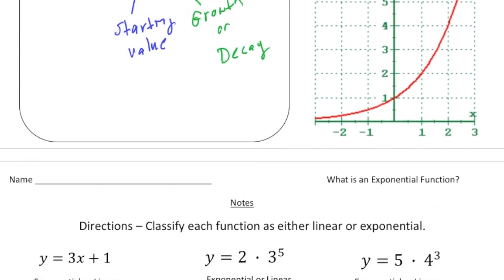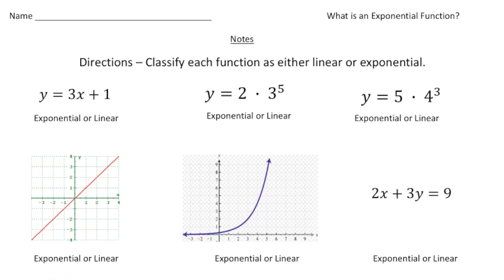So let's take a look at the third page and let's try to identify which of these functions are linear and which of these functions are exponential. So the first one we have y equals 3x plus 1 and that's written in slope intercept form so we know that's definitely linear. Here we have y equals 2 times 3 to the fifth power. That would be exponential. Here we have y equals 5 times 4 to the third. That's also exponential.